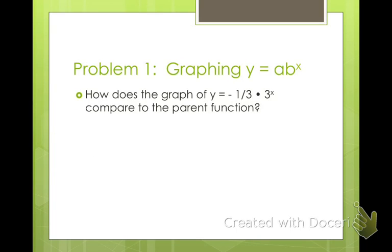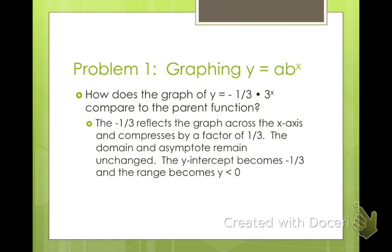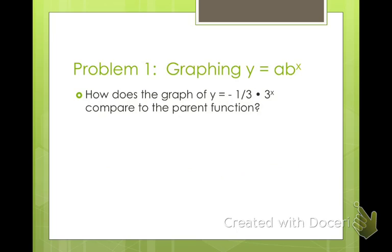So we're going to start by graphing. How does the graph of y equals negative 1 third times 3 to the x compare to the parent function? Well what would our parent function be in this case? Well our parent function itself is y equals 3 raised to the power of x. So what's the difference between this function and this function?